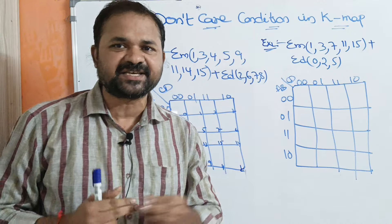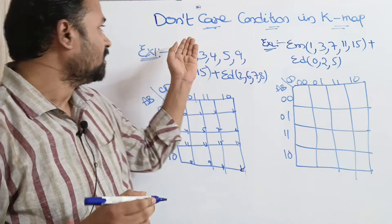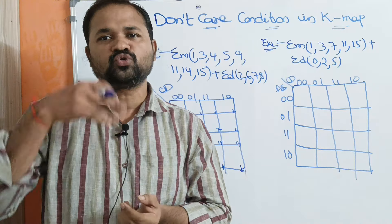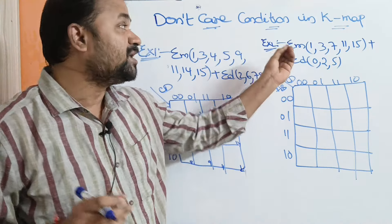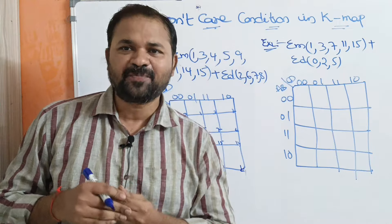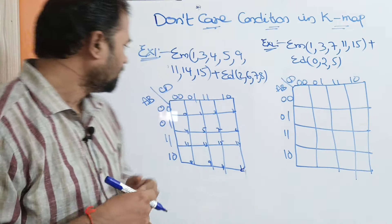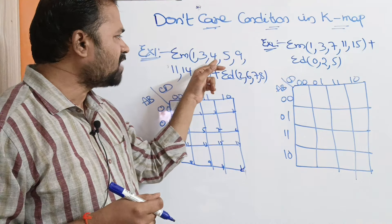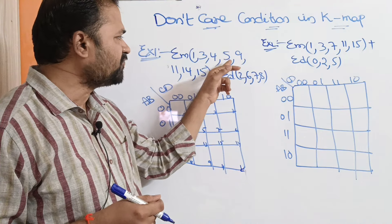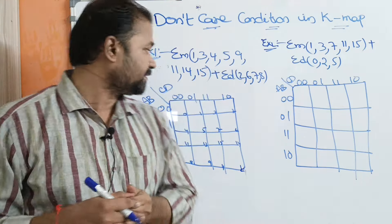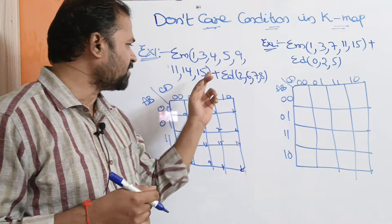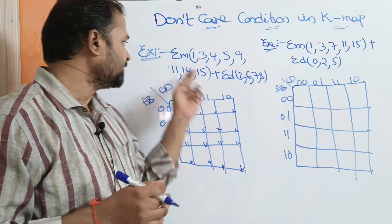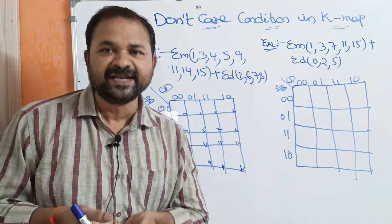Let us discuss here about don't care conditions in K-maps. We know how to simplify a Boolean expression with the help of a Karnaugh map. Let us see this problem: sigma M of 1, 3, 4, 5, 9, 11, 14, 15. Sigma specifies the sum operation, and M specifies minterm.